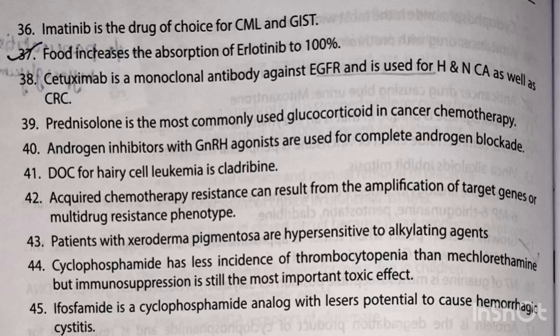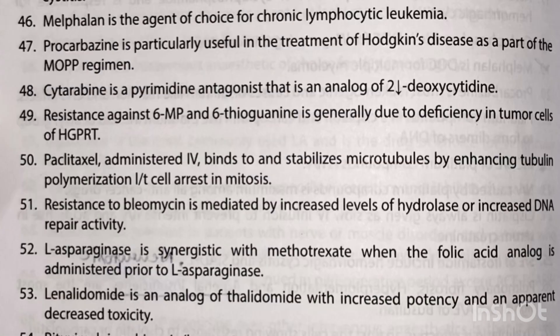Cyclophosphamide has less incidence of thrombocytopenia than mechlorethamine, but immunosuppression is still the most important side effect. Ifosfamide is a cyclophosphamide analog with lesser potential to cause hemorrhagic cystitis. Melphalan is the agent of choice for chronic lymphocytic leukemia. Procarbazine is particularly used in the treatment of Hodgkin's disease as part of the MOPP regimen.